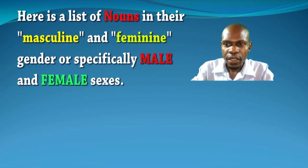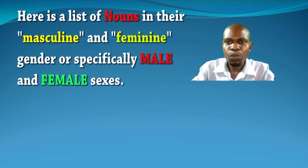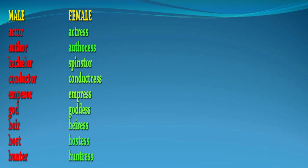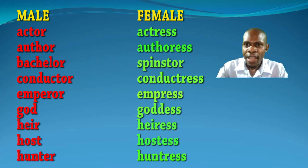Here is a list of nouns in their masculine and feminine gender, or specifically male and female sexes. The list starts with male and ends with female.